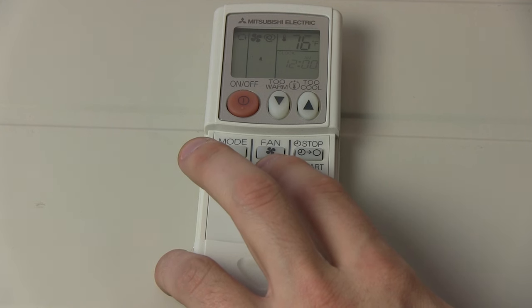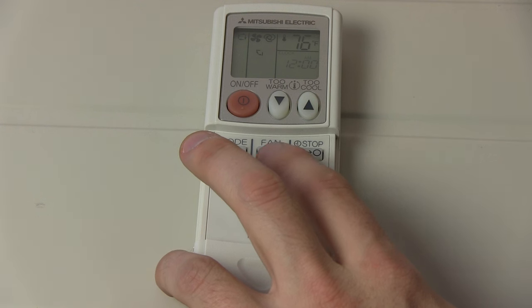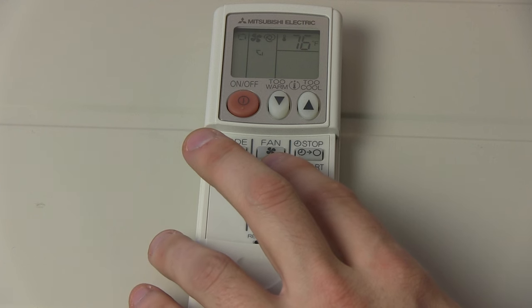Once we've cycled through the position where we can set our vane, we also have an option for oscillate. What this is going to do is it's going to ramp the vane up and down to spread a more even flow throughout the room.